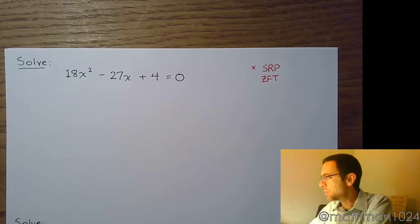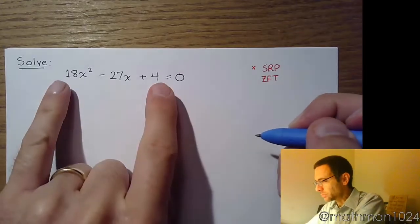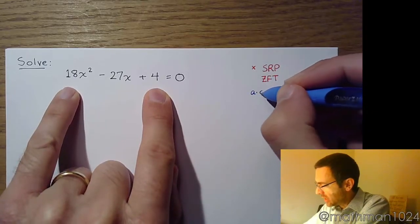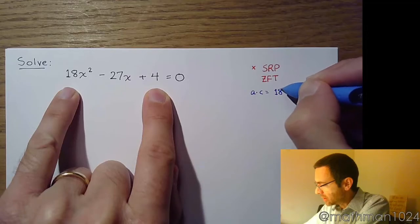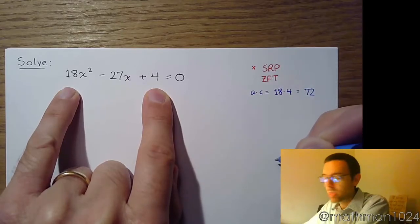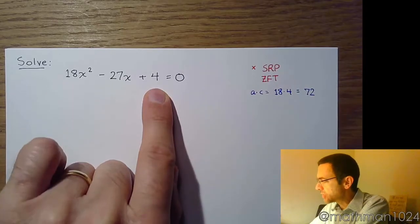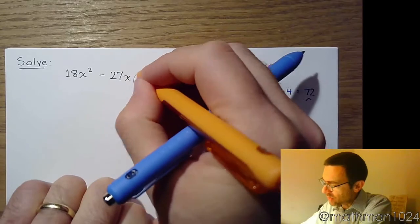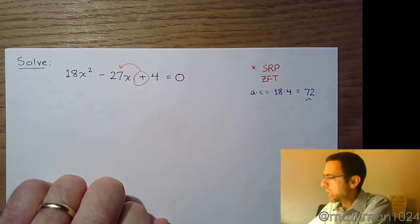If we do the zero factor theorem, you might want to do the AC method. So the AC method would say, do 18 times 4. A times C means 18 times 4, that equals 72. And you want to see, can you find factors of 72 that will add to 27?